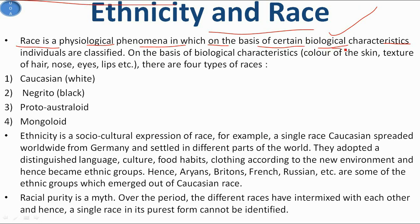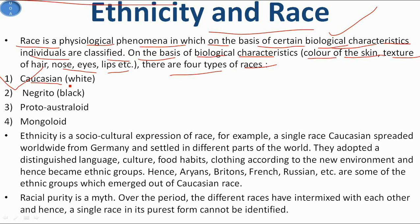The biological characteristics that classify race include color of the skin, texture of the nose, eyes, lips, etc. On this basis there are four types of races: Caucasians (white), Negrito (black), Proto-Australoid, and Mongoloid. Race is a physiological phenomenon whereas ethnicity is the socio-cultural expression of race, just as gender is the socio-cultural expression of sex.